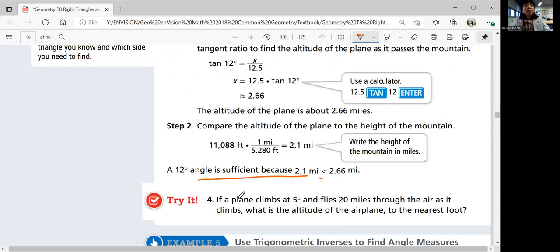All right, try number four. If a plane climbs at 5 degrees and flies 20 miles through the air as it climbs, what is the altitude of the airplane to the nearest foot? Okay, so plane climbs at 5 degrees and flies 20 miles through the air. So this is 20 miles through the air, so that's hypotenuse. As it climbs, what is the altitude of the airplane?